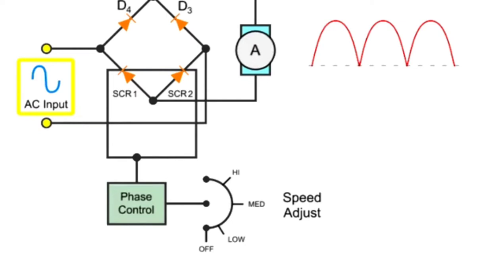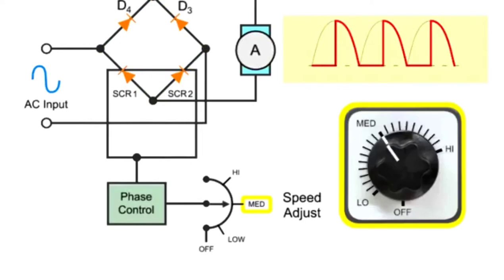This diagram depicts an AC sinusoidal wave being altered by a full-wave rectifier to produce partial half-waves. The partial half-wave output produced is reduced based on when the firing device is activated.